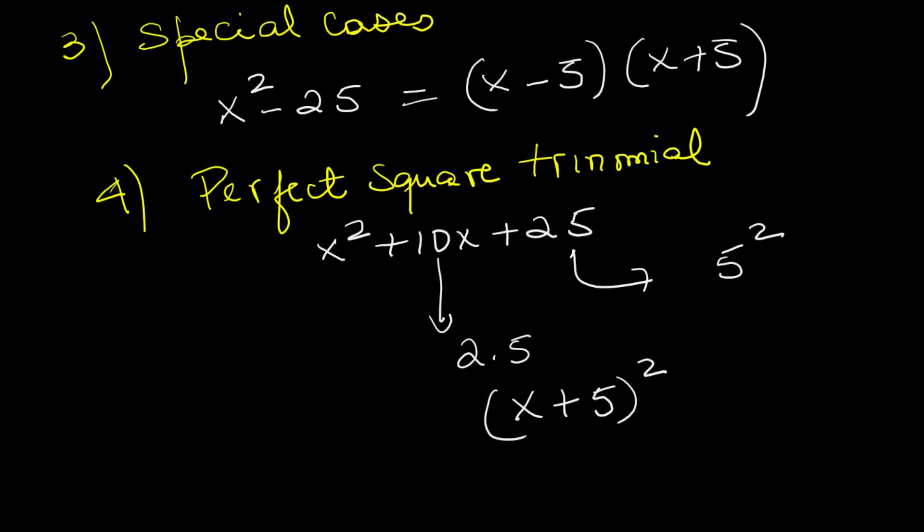Recognizing these shortcuts will save you a lot of time. If the leading coefficient is 1, look for two numbers that multiply to the last term and add to the middle. If the leading coefficient is larger than 1, use the AC method. Multiply, split, and group. And always watch for difference of squares and perfect squares. Those are the instant shortcuts.